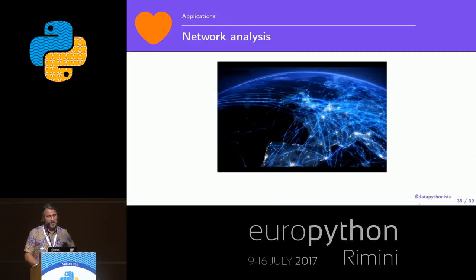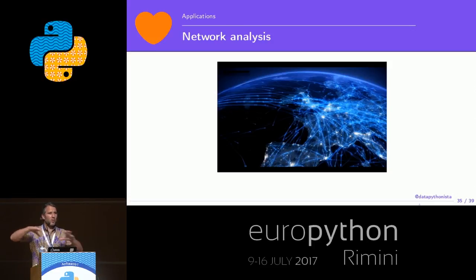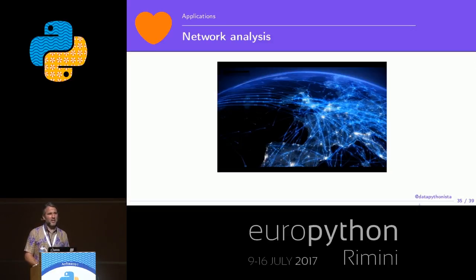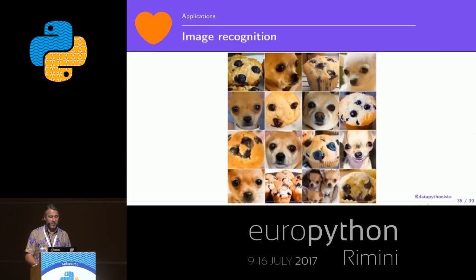Network analysis is another interesting topic. They are able to predict, for example, problems with sicknesses like the flu — some variants of the flu were detected based on the network of flight connections, predicting when the first cases would appear in every country with great accuracy. Also, for the banking system, they check transactions between banks and say: if this bank is defaulting, this other bank is going to default too because they make so many transactions together.